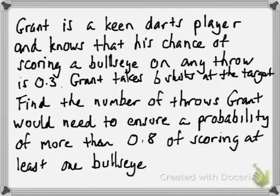It's time to look at one of the harder questions on the binomial distribution. Grant is a keen darts player and knows that his chance of scoring a bullseye on any throw is 0.3. Grant takes six shots at the target. Find the number of throws Grant would need to ensure a probability of more than 0.8 of scoring at least one bullseye.